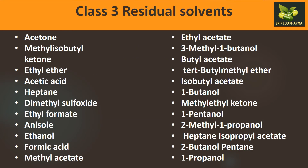Examples of Class 3 residual solvents that can be used frequently include: acetone, methyl isobutyl ketone, ethyl ether, acetic acid, heptane, dimethyl sulfoxide (DMSO), ethyl formate, anisole, ethanol, formic acid, methyl acetate, ethyl acetate, 3-methyl-1-butanol, butyl acetate, tertiary butyl methyl ether, isobutyl acetate, 1-butanol, methyl ethyl ketone, 1-pentanol, 2-methyl-1-propanol, isopropyl acetate, 2-butanol, pentane, and 1-propanol.